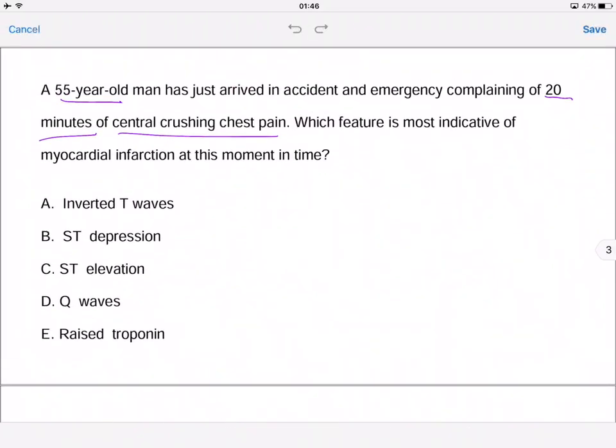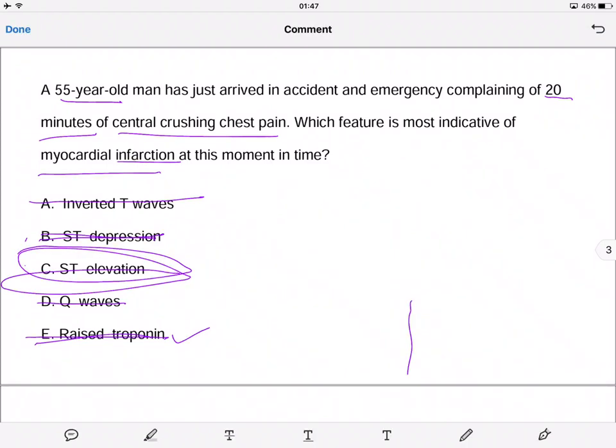Going back to the question, we're looking for anything pointing toward infarction because an MI is usually an infarction - an obstruction of blood. It's not inverted T waves, that's signs of ischemia. We wouldn't think about troponin because that takes time. Presence of Q waves isn't something you'd see immediately. We're left with ST depression and ST elevation. ST depression shows ischemia, whereas ST elevation shows myocardial infarction, so it's C.